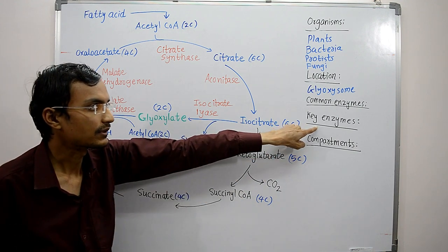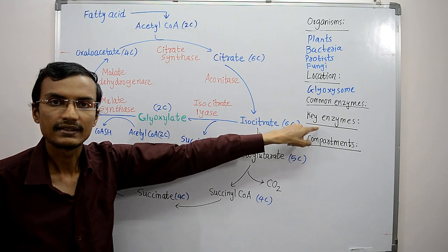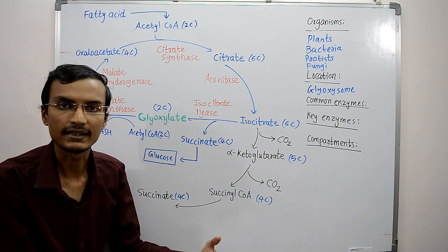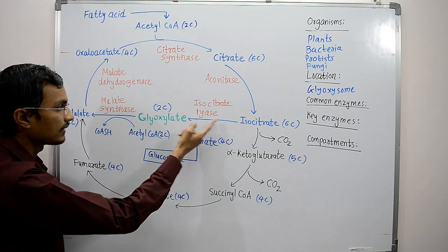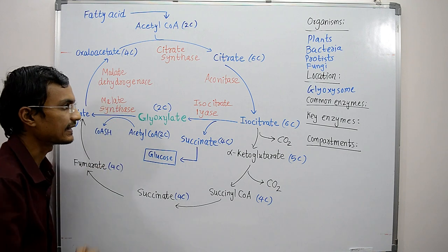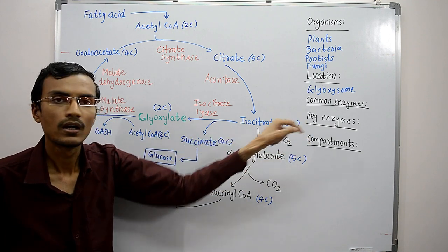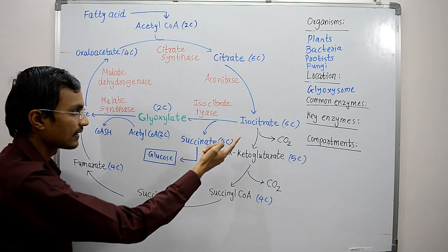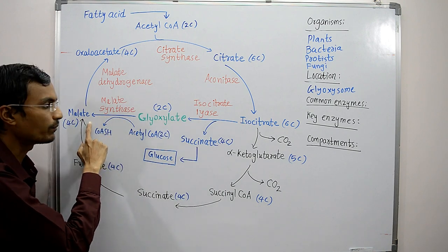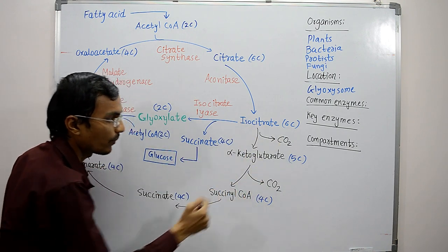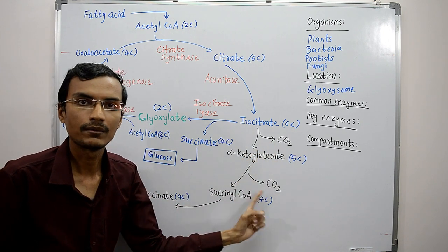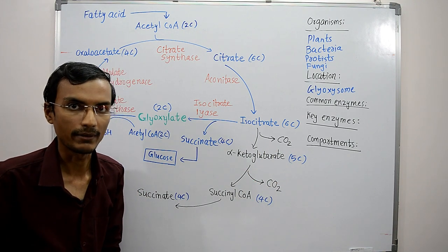The key enzymes unique to the glyoxylate cycle are isocitrate lyase and malate synthase. These enzymes catalyze bypass reactions. Isocitrate is directly converted to malate, bypassing the two oxidative decarboxylation reactions in which carbon atoms are lost.